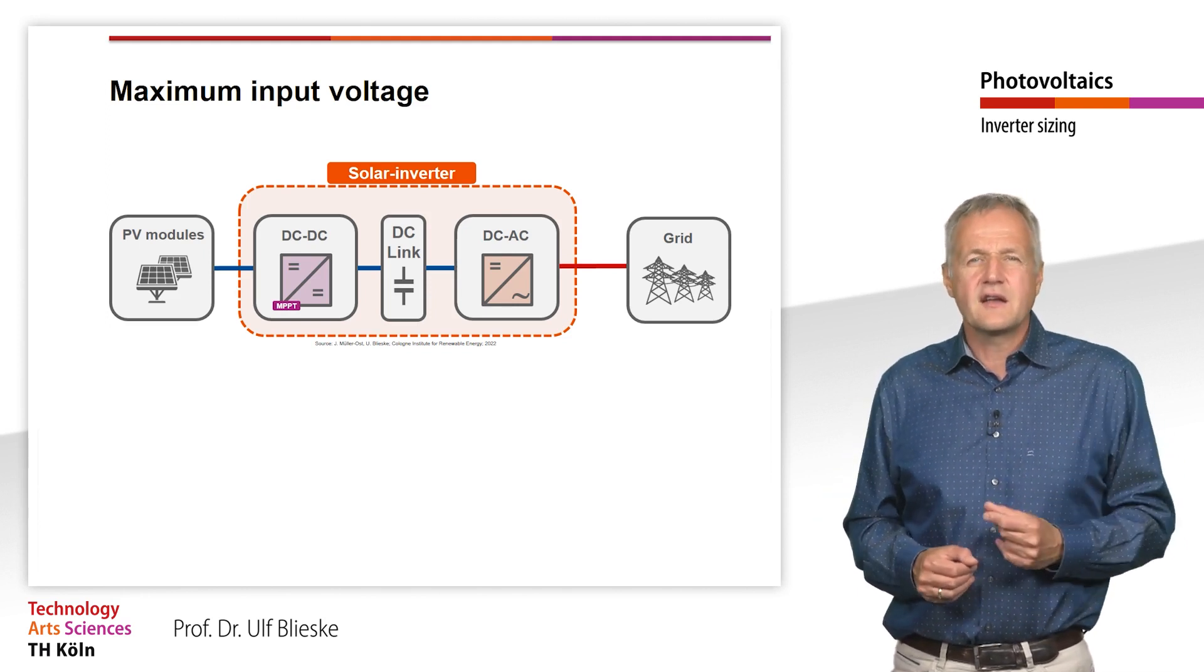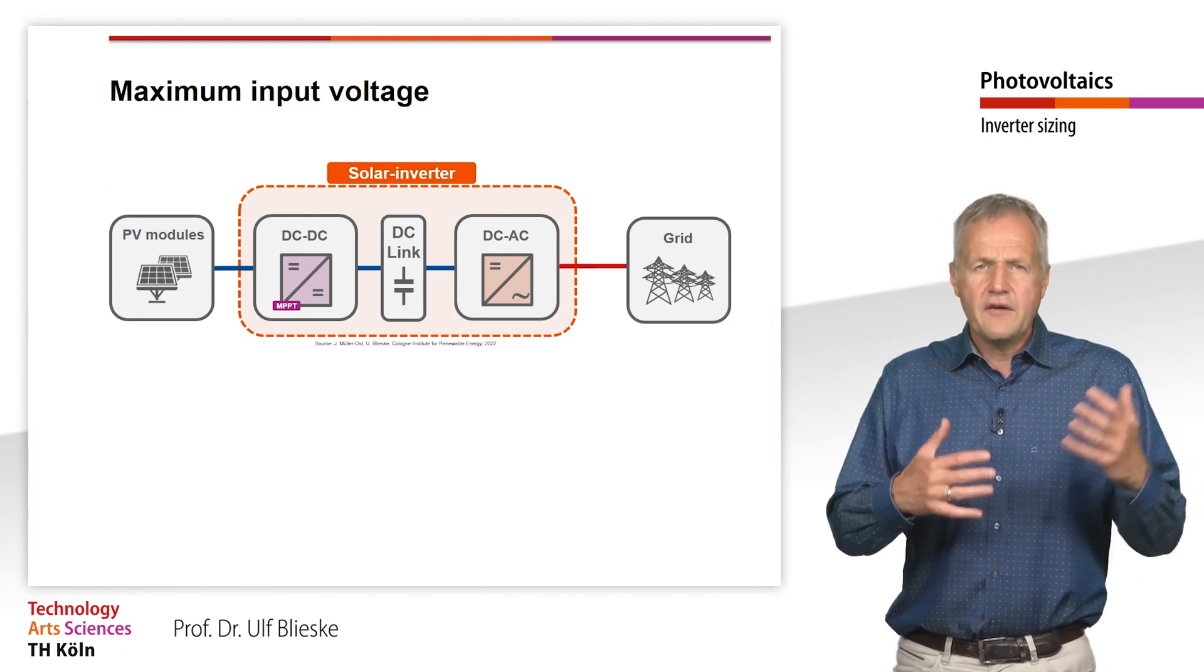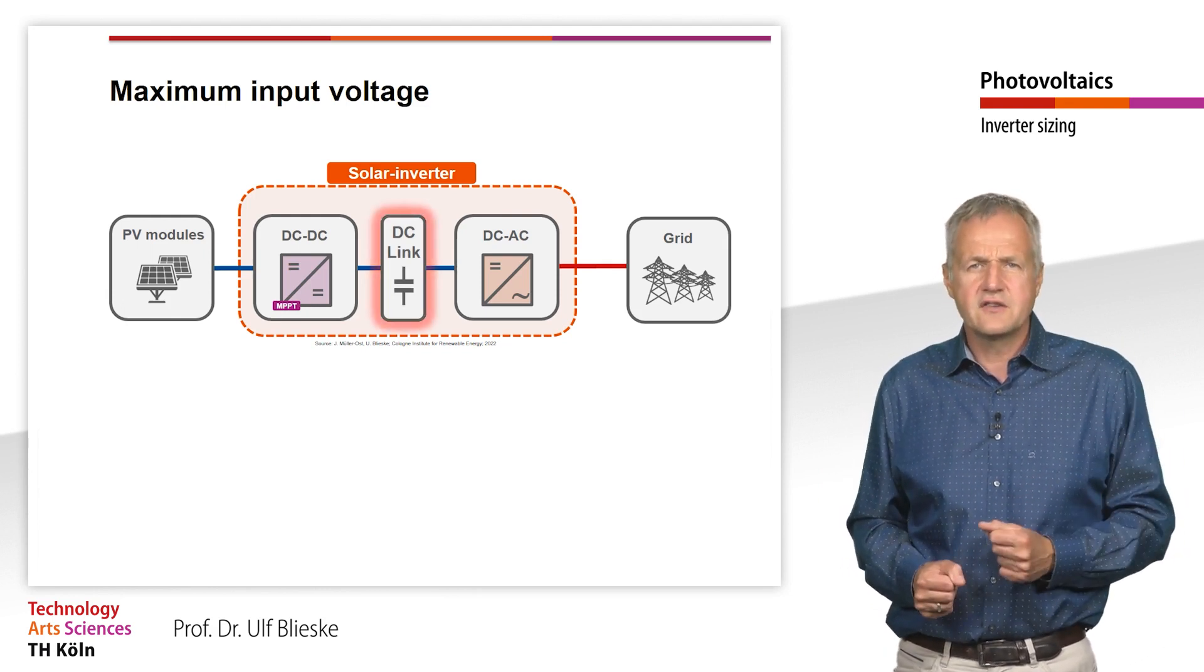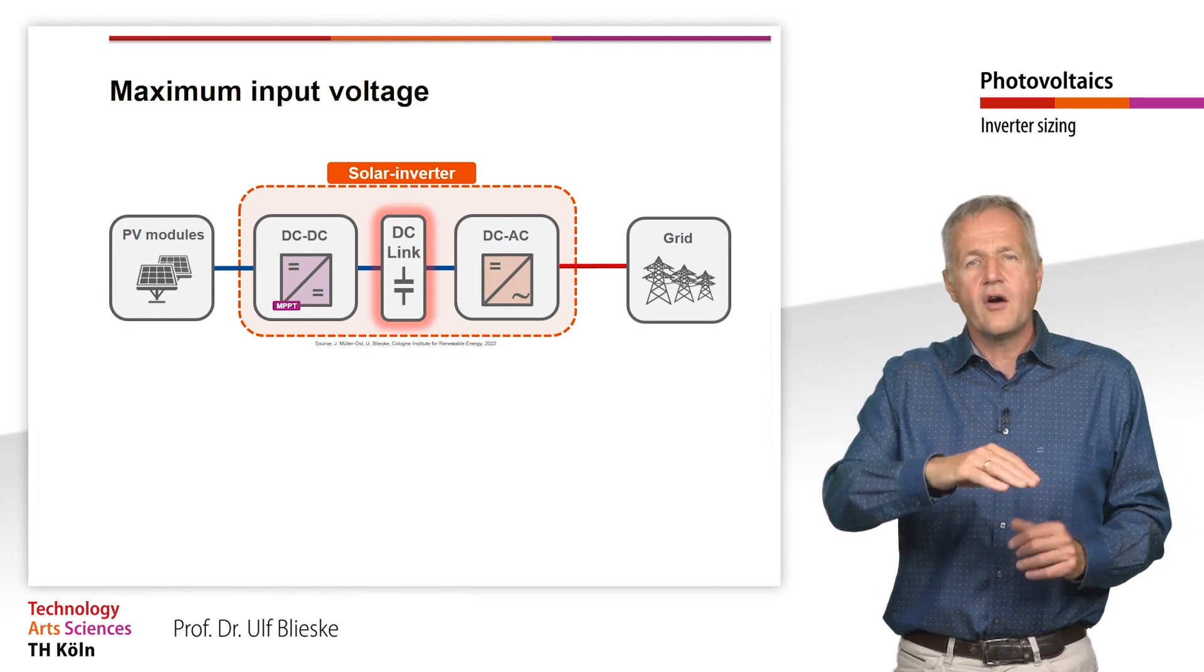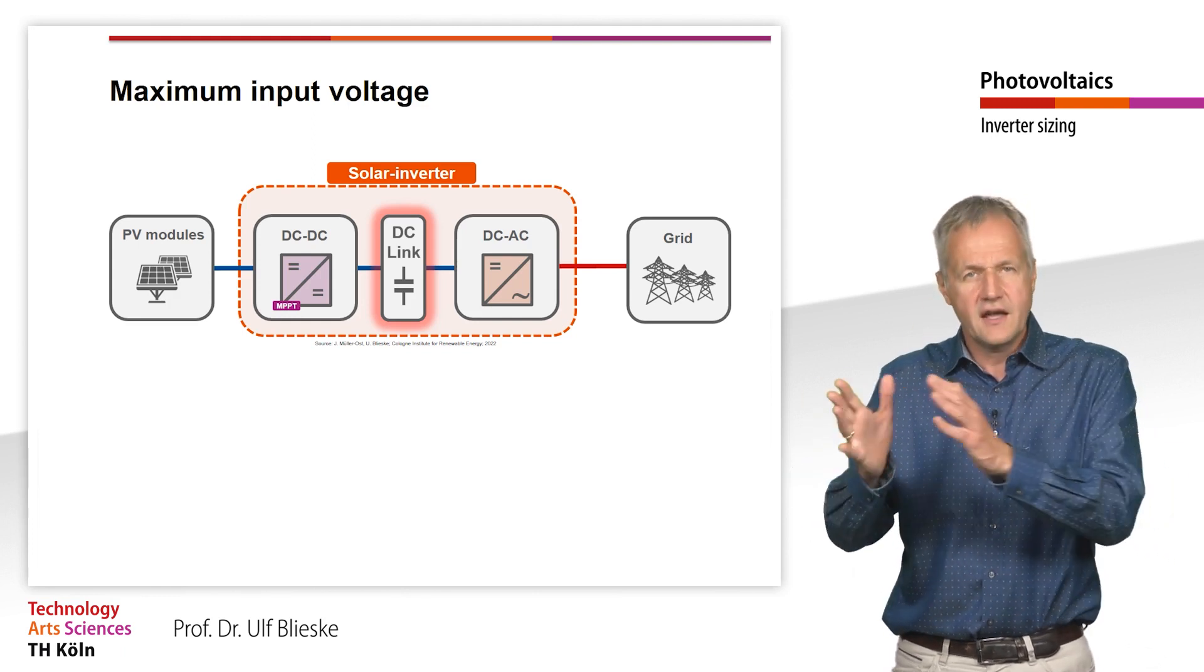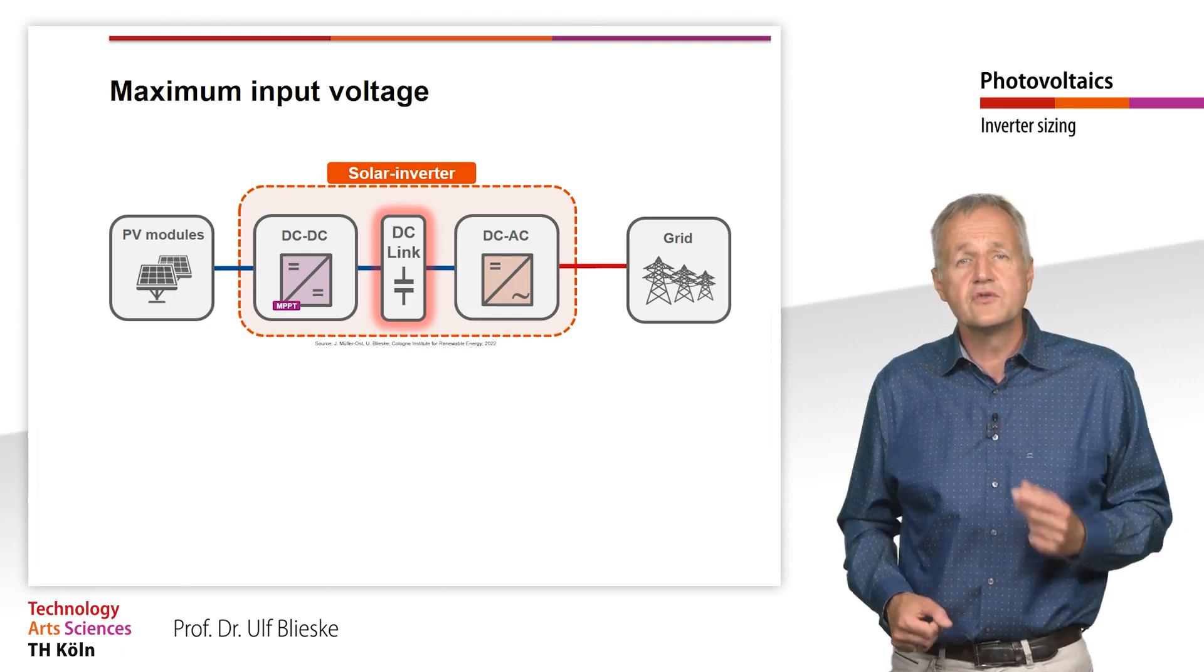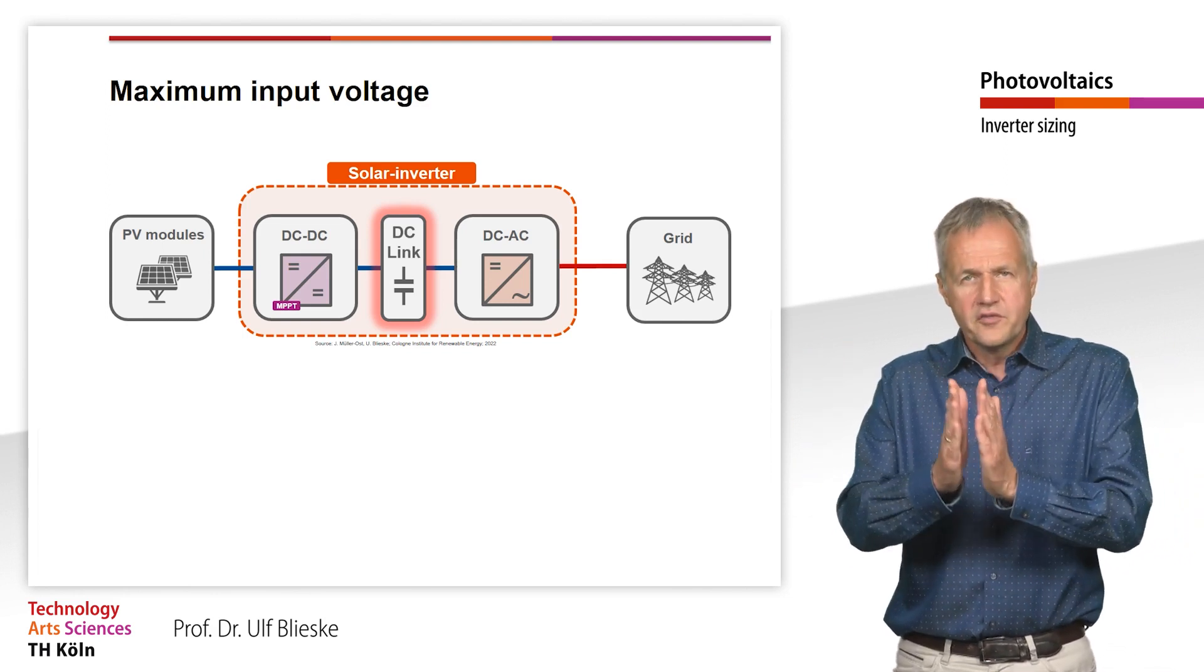Let us take another look at the schematic structure of an inverter. Every solar inverter has a large capacitor, the so-called DC link. This capacitor is the interface between the continuous energy flow of the solar generator and the alternating energy flow of the AC grid. Here, so-called electrolytic capacitors are usually used, which offer a large capacity on a very small space.